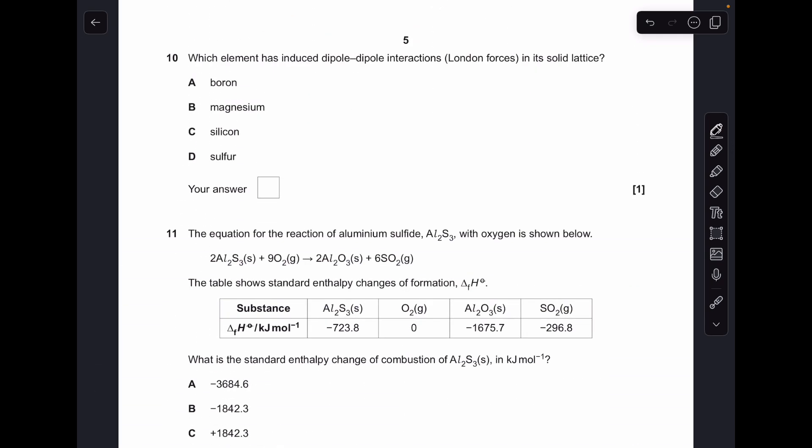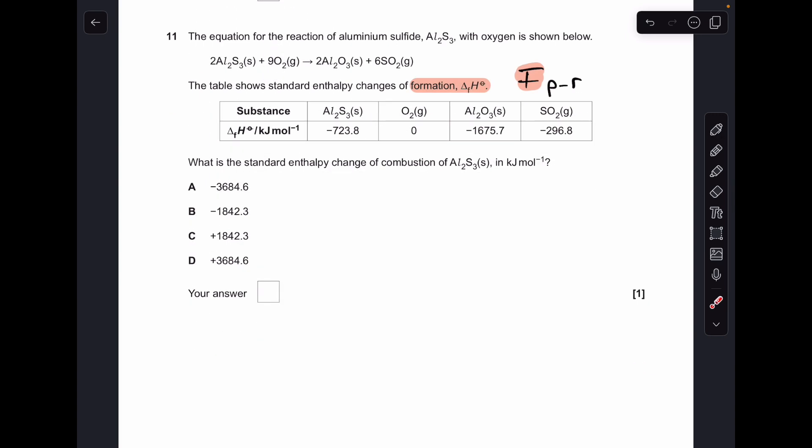Number 10's all linked to the type of structure. So, boron's got a giant covalent structure, so we've got covalent bonds between atoms in this one, magnesium's giant metallic, so you've got metallic bonds between the particles in that one, another giant covalent for silicon, and sulphur, simple covalent, that's got induced dipole-dipole, or London forces between the molecules, so D was the answer.